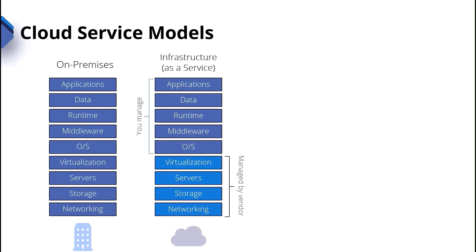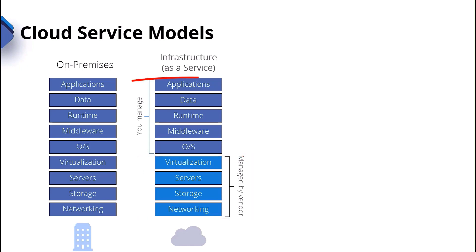As we move into infrastructure as a service in the public cloud, we're taking away those bottom four areas — they're managed by the vendor now. The vendor is going to put the physical switches in, the storage arrays in, the servers in, and they are going to manage the virtualization layer. We can still build virtual machines, but we're responsible for the operating system, middleware, runtime, applications, and data that live on top of them.